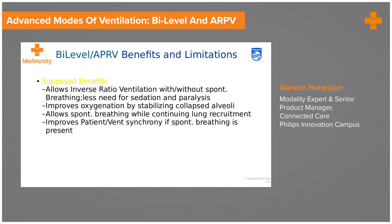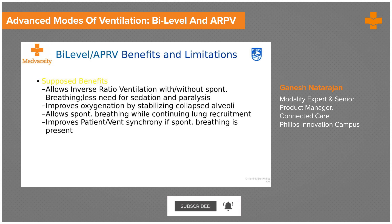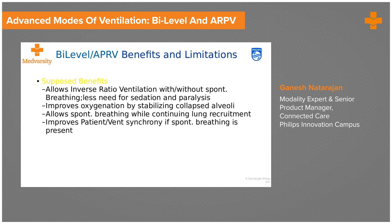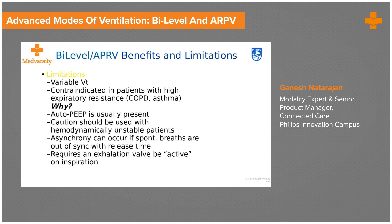Every mode has benefits as well as limitations. The supposed benefits of bi-level and APRV include: it allows inverse ratio ventilation with or without spontaneous breathing, there is reportedly less need for sedation and paralysis, there is improved oxygenation, it allows spontaneous breathing while continuing lung recruitment, and because the patient can load and unload during any part of the cycle there is improved patient-ventilator synchrony.